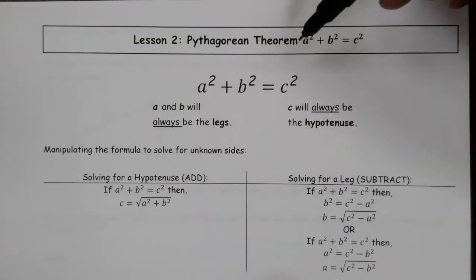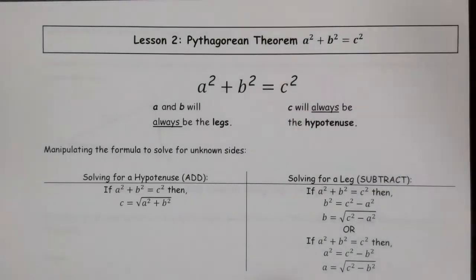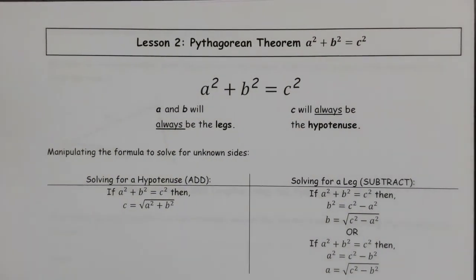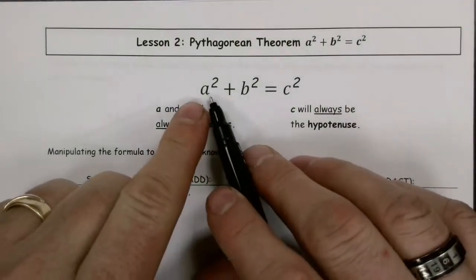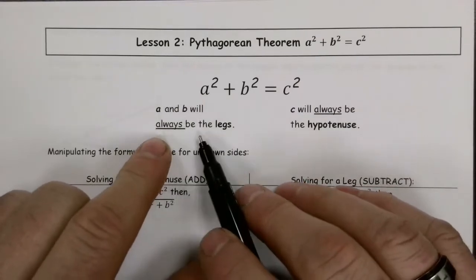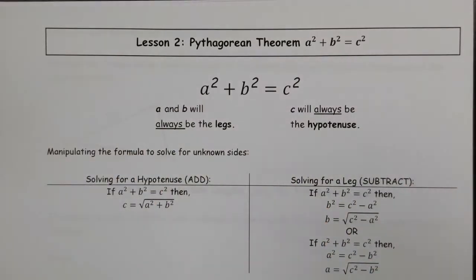Most people default to saying a squared plus b squared equals c squared. The Pythagorean Theorem is an important part of trigonometry — the analysis of triangles. We want to make sure we've discussed this; you've probably already seen it before. In this formula, a squared plus b squared equals c squared, a and b will always be the legs, and c will always be the hypotenuse.